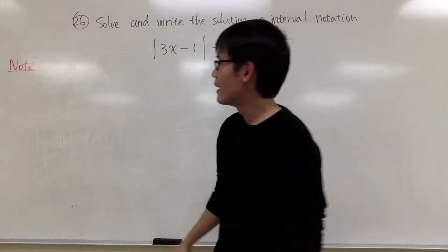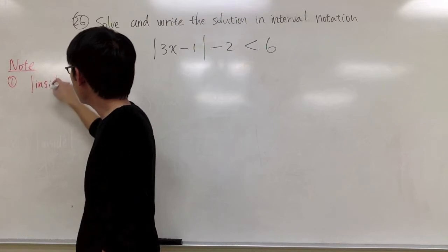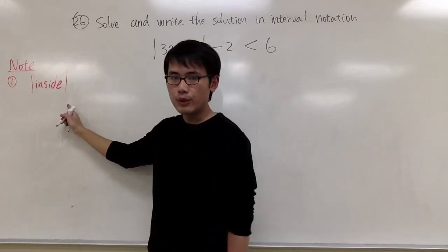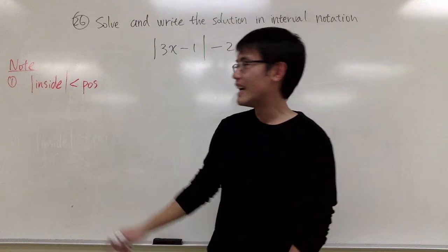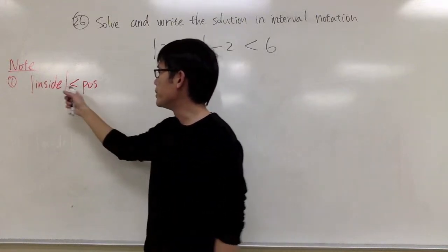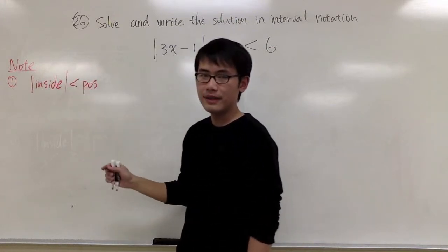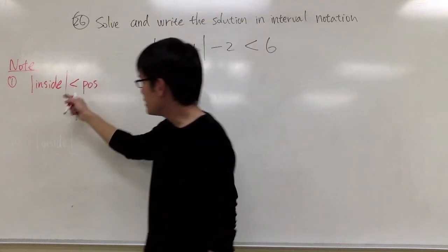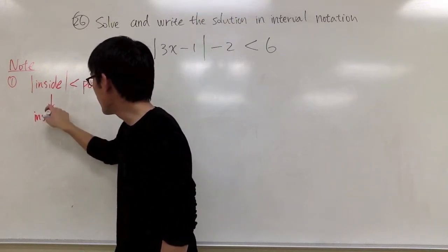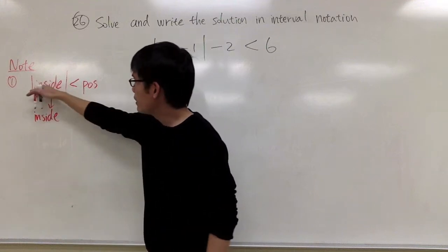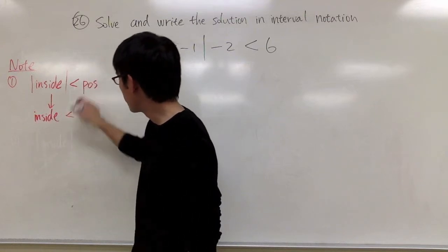Here are the two things we need to know. The first situation is when you have some absolute value of something inside, and you can isolate that absolute value to be less than some positive number. If this is the case, what I will do is write down the expression inside in the middle — this is how we get rid of the absolute value.